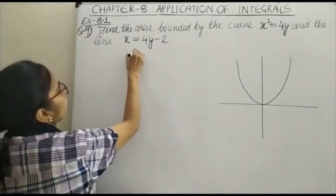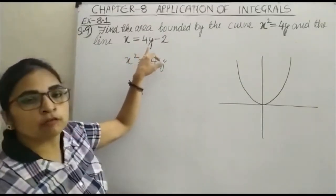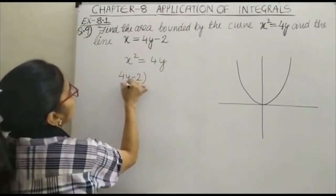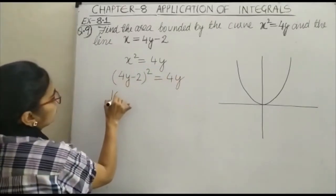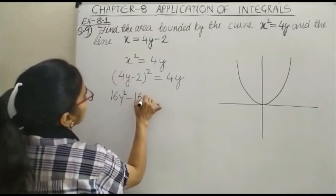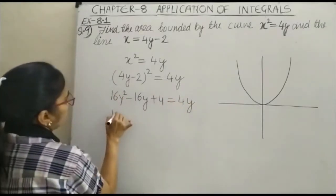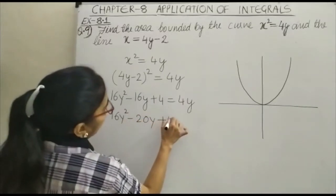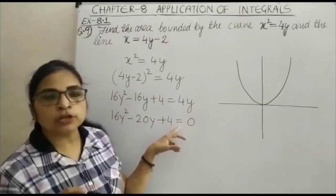From x² = 4y, we substitute x = 4y - 2, giving us (4y - 2)² = 4y. Expanding: 16y² - 16y + 4 = 4y, which simplifies to 16y² - 20y + 4 = 0. Dividing the equation by 4 gives us a simpler form.